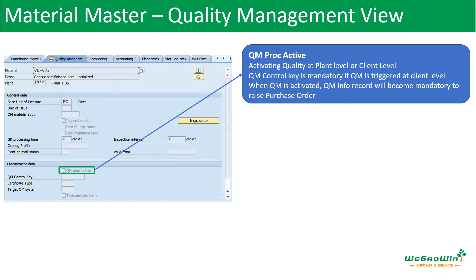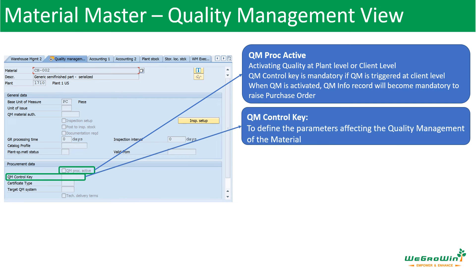The procurement data tab in quality management view covers materials related to quality procurement — specifically the checks for quality during the procurement process. First, let us see what is the quality management procurement active indicator. This indicator switches on the QM inspection for procurement and it can be activated at the plant level or at the client level. If it is activated at the client level, then the QM control key field must be defined. Selecting QM procurement active also means the system must have a QM info record, which is a combination of supplier and material related to the quality parameters.